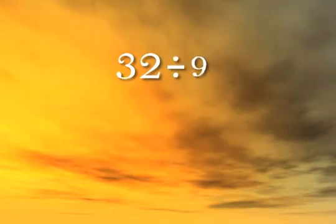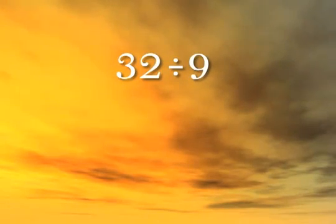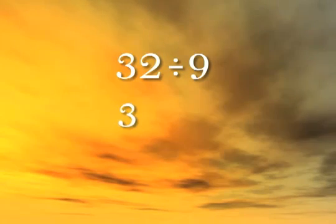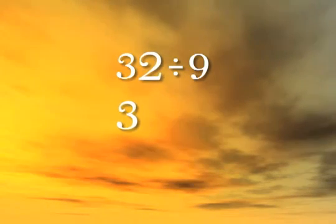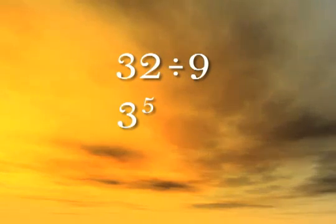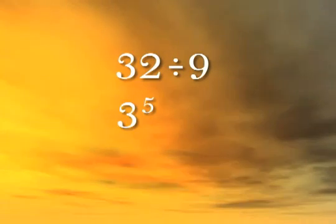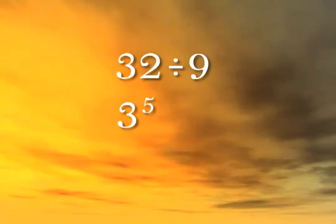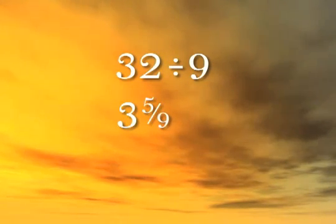Answer this question in under five seconds using base division. Bring down the first digit, three, and add it to the next digit to make five. Five is the remainder amount, so the answer is three and five ninths.